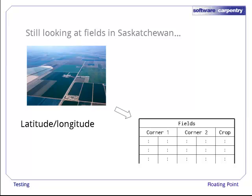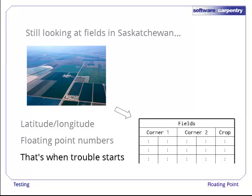Those coordinates would probably be recorded as latitude and longitude, which the computer would store as floating-point numbers rather than integers. And that's where our problems start.